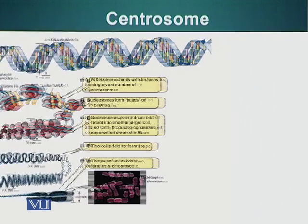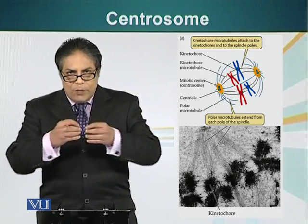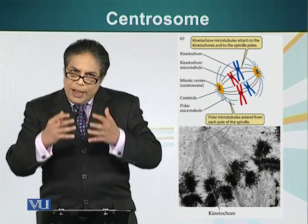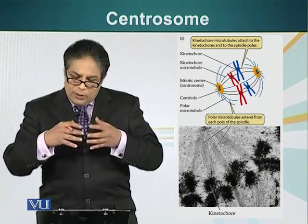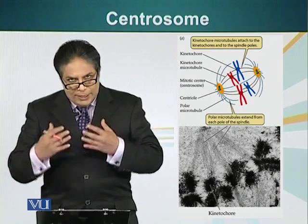Now let's look at another important component of cell division: the centrosome and the microtubules that originate from it. There are two types of microtubules. The kinetochore microtubules go and bind the chromosomes made up of DNA and protein, and other microtubules that are not bound to the chromosomes. These microtubules are attached to the centrosome — the microtubule organising centre. When cell division happens, we have to separate the two sets of chromosomes, and force has to be generated. Microtubules are the scaffolds along which motor proteins can move to generate this force.